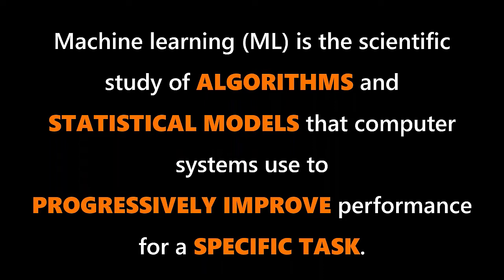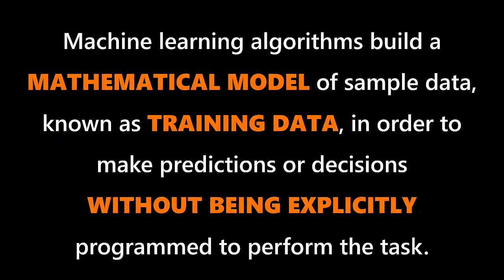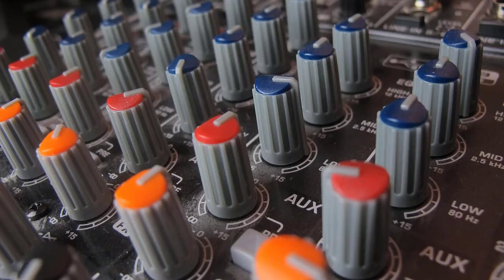If we keep looking at Wikipedia, we find that machine learning algorithms build a mathematical model of sample data known as training data in order to make predictions or decisions without being explicitly programmed to perform the task. It's a heck of a lot of buttons and knobs to turn, so let's step away from the definition and look at an example instead.